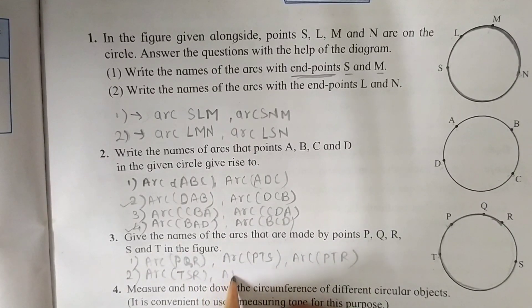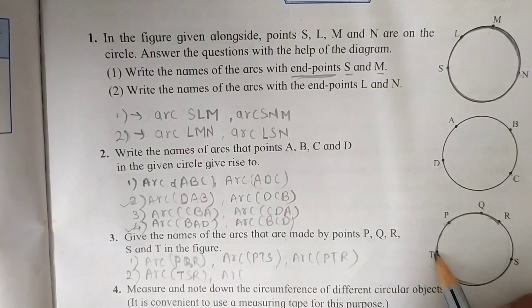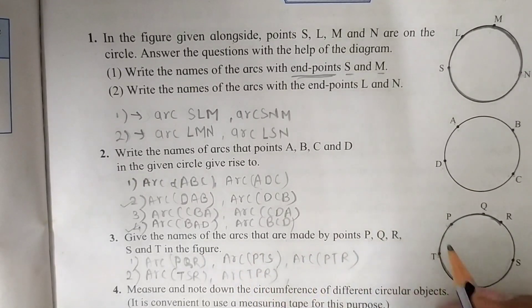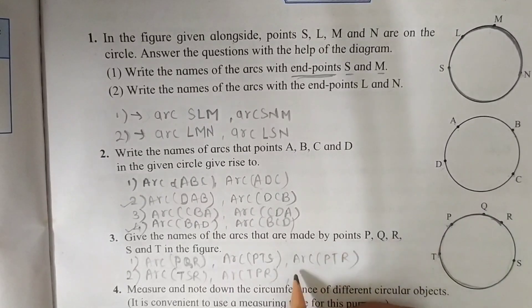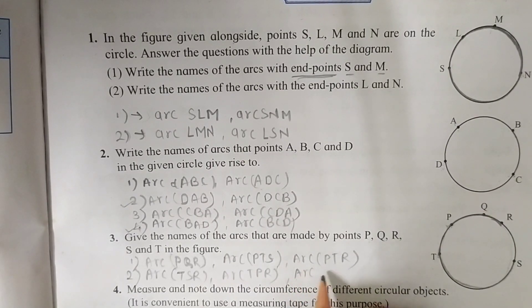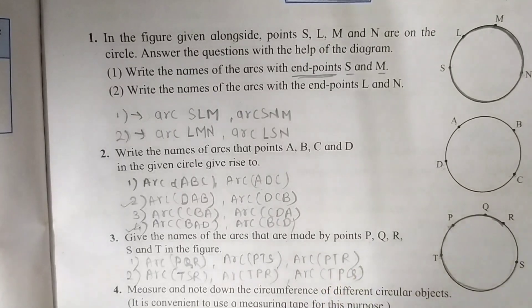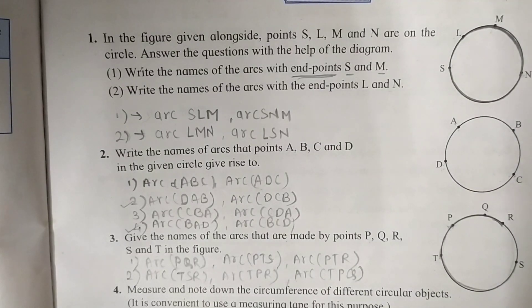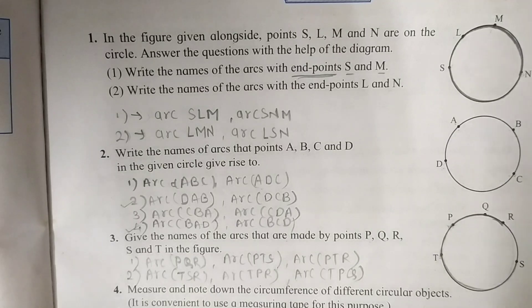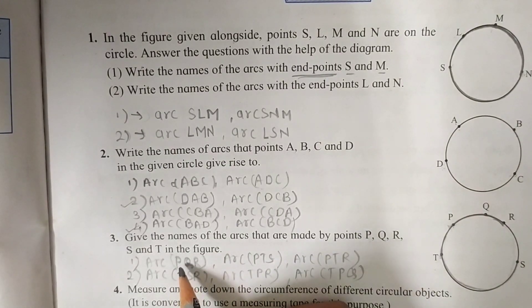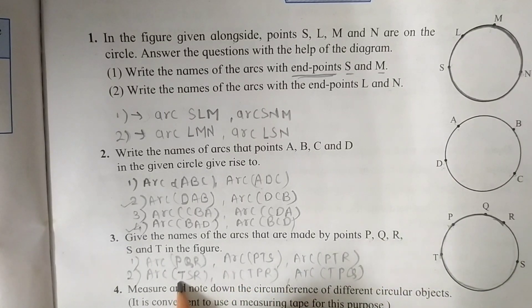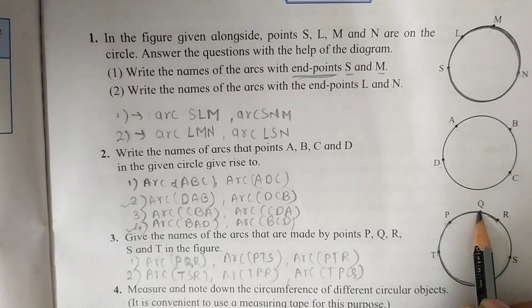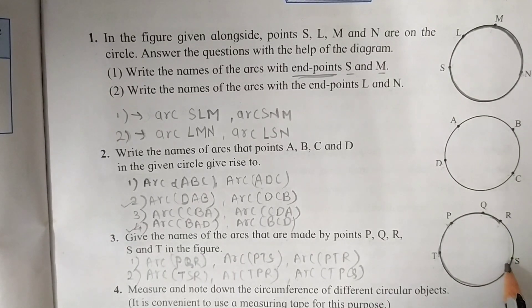And arc T, P, R. You can also write arc T, P, Q. These are the names of arcs which are made from different points. These are the names of arcs which are starting from point P and point T. Now you can write here like this for point Q, point R and point S also.